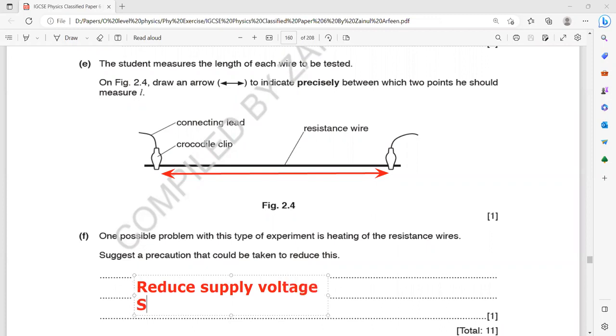Or we can switch off between the readings. Like the circuit should not remain on for a longer period of time. We record the value and then we will switch off the circuit. Because the current is passing for a longer time, it will produce a greater heating effect. So reduce the supply voltage or reduce the current.